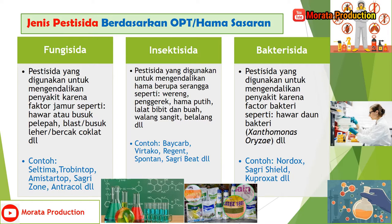Yang kelima yaitu insektisida, yaitu pestisida yang digunakan untuk mengendalikan hama berupa serangga seperti wereng, penggerek, hama putih, lalat bibit dan lalat buah, walang sangit, belalang, dan lain-lain. Contoh produknya adalah Bekrat, Virtaco, Regen, Spontan, Sagribit, dan lain-lain.